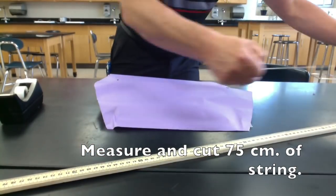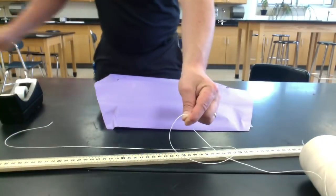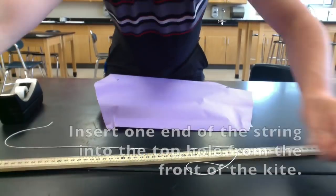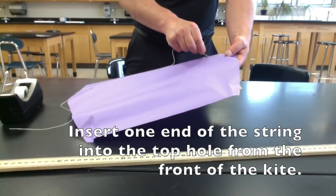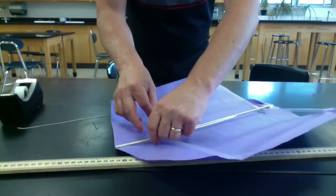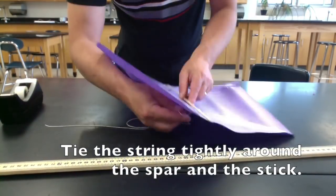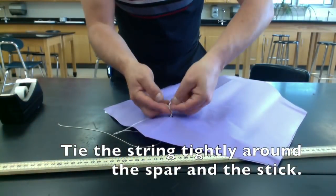Next, measure and cut 75 centimeters of string. Insert one end of the string into the top hole from the front of the kite. Tie the string tightly around the spar and the stick.